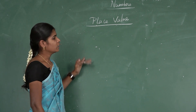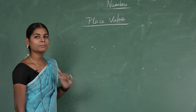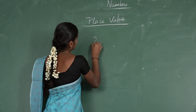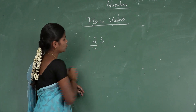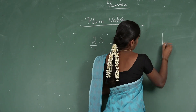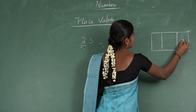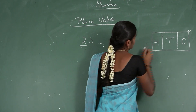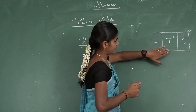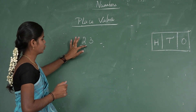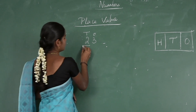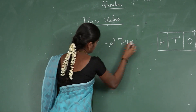Now let us move to place value. What is place value? Each digit in a number has its own position and its own value in that position. To find place value, you need to know the place value chart: starting from right to left, the positions are 1s, 10s, and 100s. For example, in 23, what is the place value of 2? There are two 10s, so the place value of 2 is 2 tens, which equals 20.